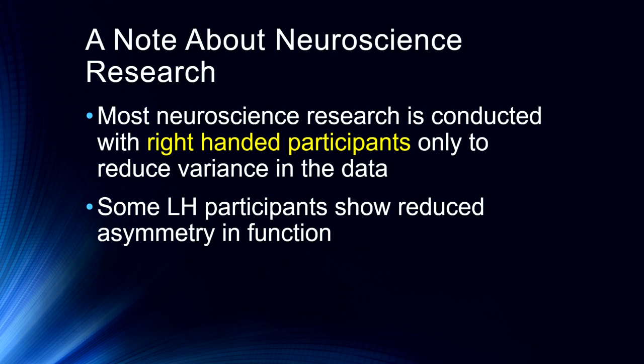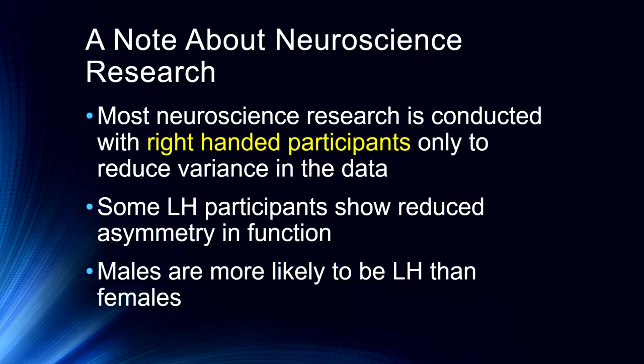We need to understand that some left-handed participants show reduced asymmetry in function. They show in some ways a little bit more bilaterality, in particular with things like language. Not all — about 30% of left-handed participants show that kind of reduced asymmetry. Additionally, males are more likely to be left-handed than females: about 13% of males are left-handed, compared to about 7% of females.